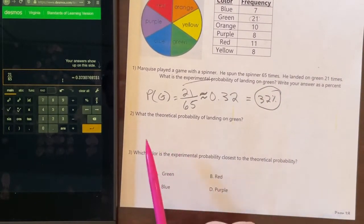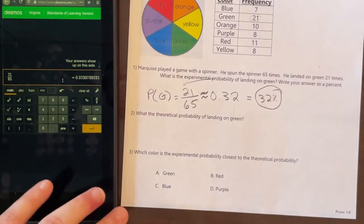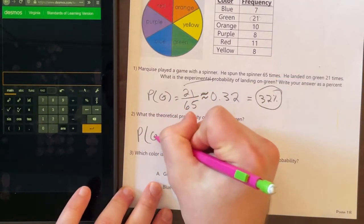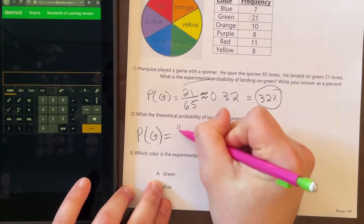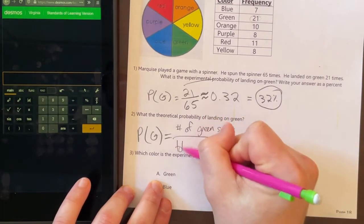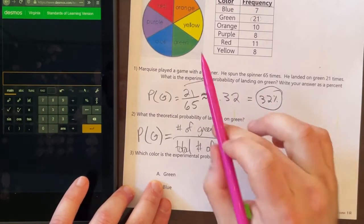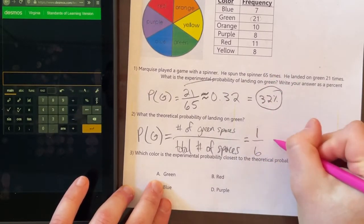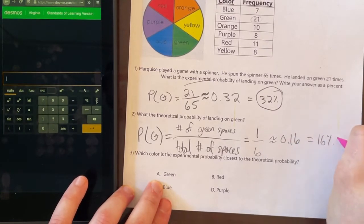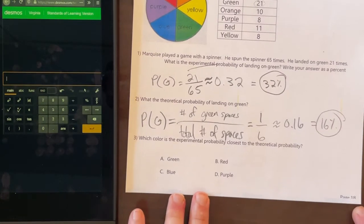Let's now compare that to what is the theoretical probability of landing on green. Be careful on this. It's saying probability of green. It's the number of green spaces over the total number of spaces. So this is going to be equal to how many green spaces? There's one. How many total spaces? There's six, which is about 0.16, which is equal to 16%. Notice how the experimental probability and theoretical probability are different, even though it's the same event.